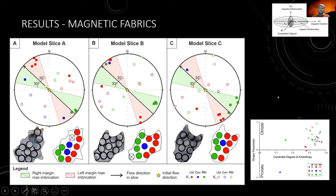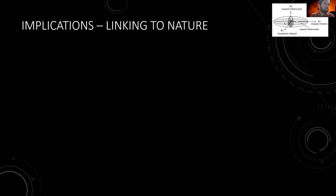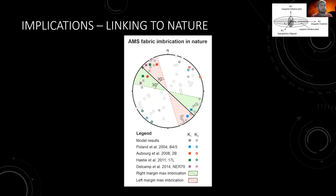All samples exhibit oblate fabrics — some quite oblate — while samples from the central zone show more triaxial to prolate fabrics. Comparing with nature: four examples of dikes with lateral flow from field studies, with their long and short axes plotted, fall within the imbrication zones predicted by the model. They also match the imbrication obtained from this analog model, which supports the interpretations from nature and validates the analog experiments.